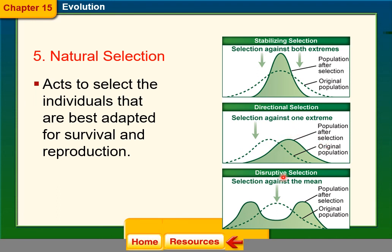Disruptive selection is where we see the most speciation, because it is selection against the mean. It pushes down on that middle phenotype, creating two new groups, and those groups will eventually probably become two new species.